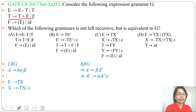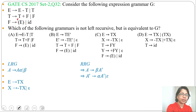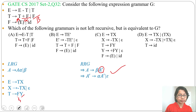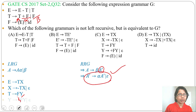Next, check this production: T derives T plus F or F. This is left recursive — T is present on the left side. Let T be A, plus F be alpha, and F be beta. Then T derives F A-dash. Using a new variable Y: T derives F Y. Then from Y: Y derives plus F Y or epsilon, where plus F is alpha.